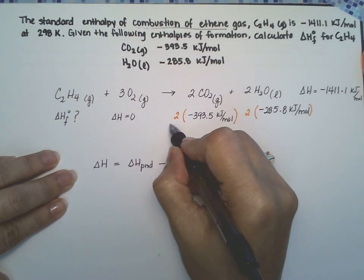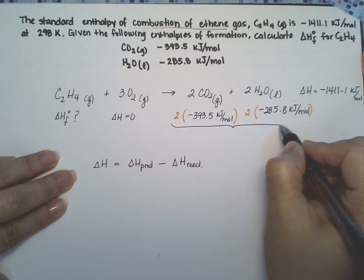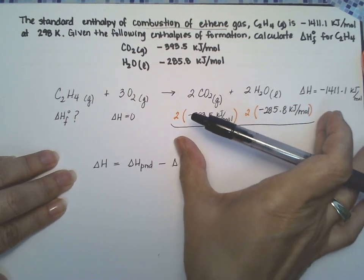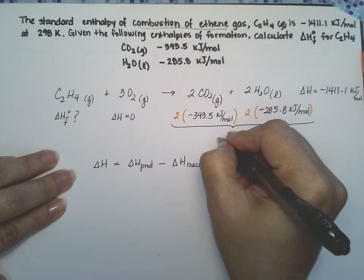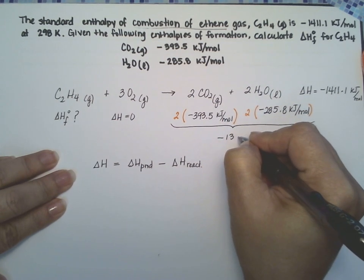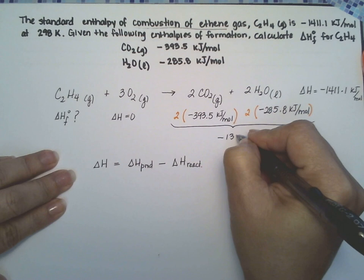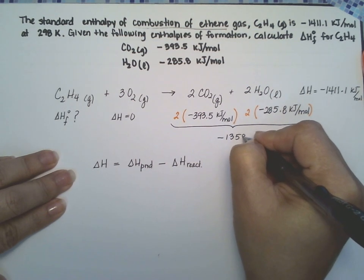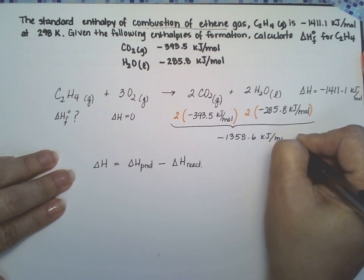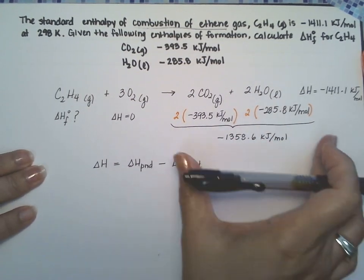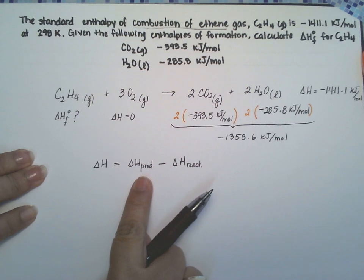All right, so the products, the delta H of the products, we're going to add these two numbers right here. So that one, I did the calculation before, negative 1358.6 kilojoules per mole. That is the delta H of the products.